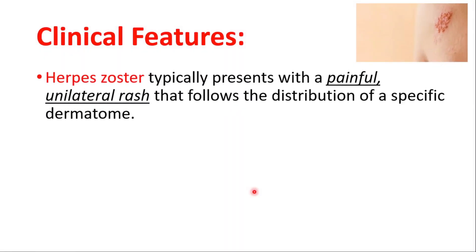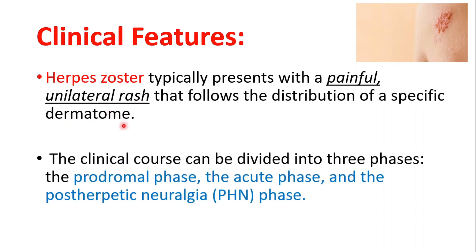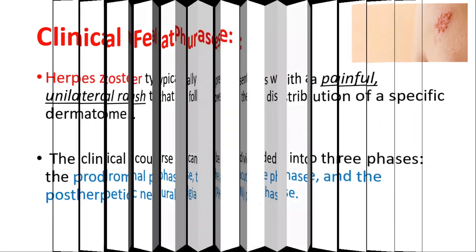Now let's talk about clinical features. It typically presents with a painful unilateral rash that follows the distribution of a specific dermatome. The clinical course can be divided into three phases: the prodromal phase, the acute phase, and the post-herpetic neuralgia phase.